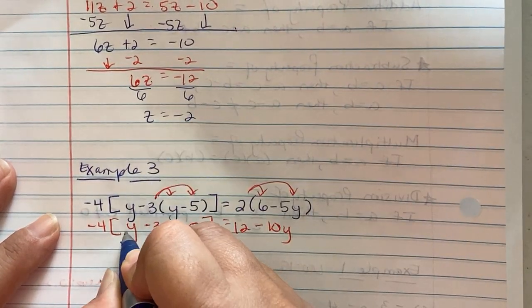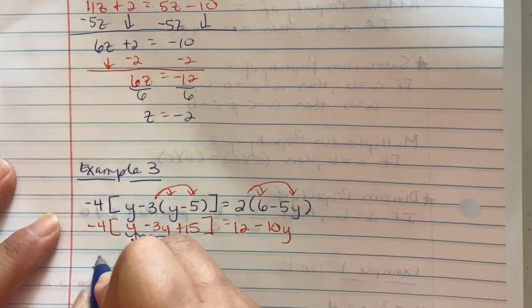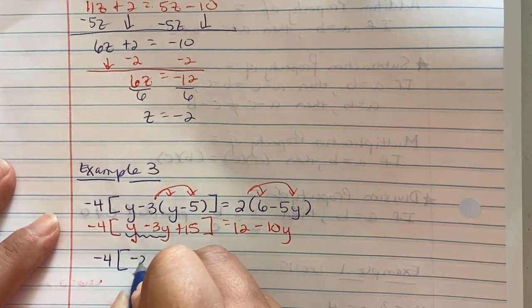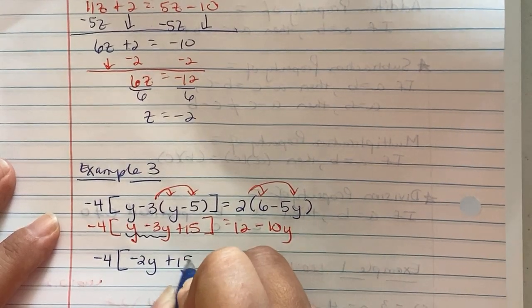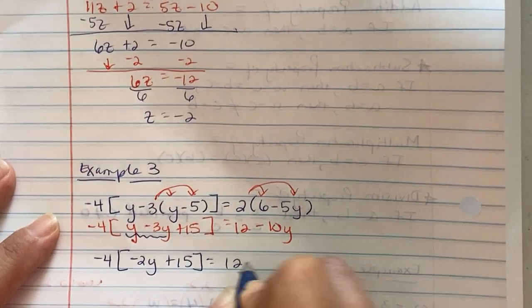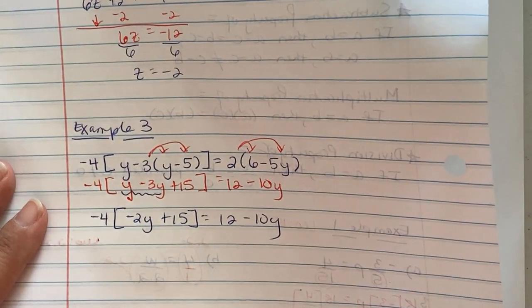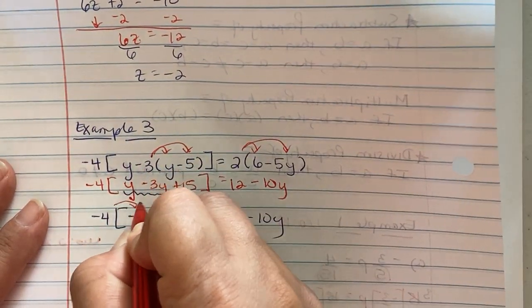So we're going to combine these two terms right here. So we see negative 4 slides down, y minus 3y is negative 2y, plus 15 equals 12 minus 10y. Now we are going to distribute in.